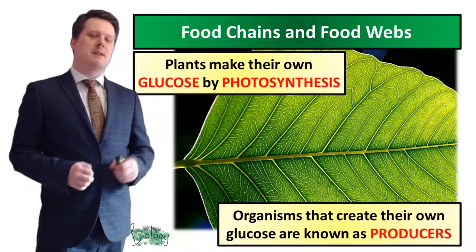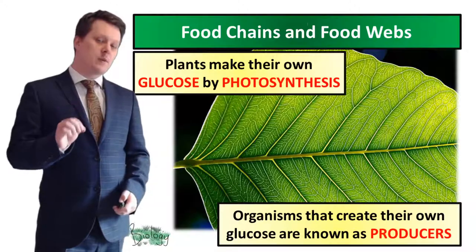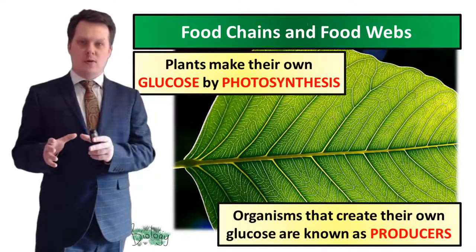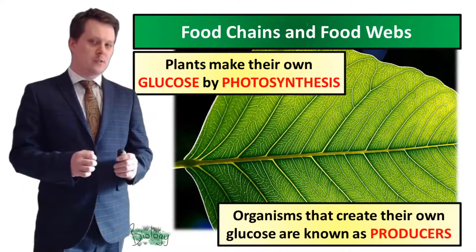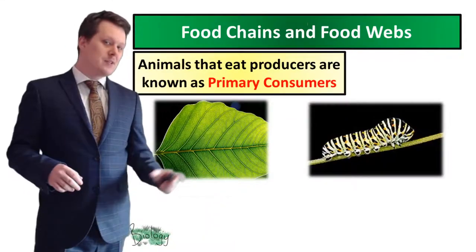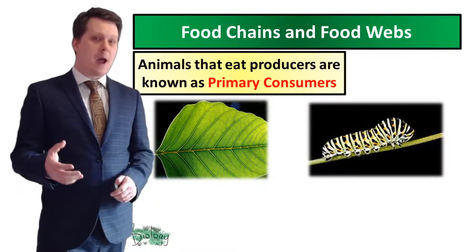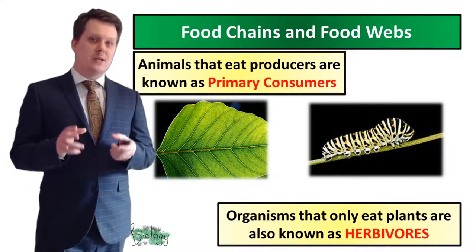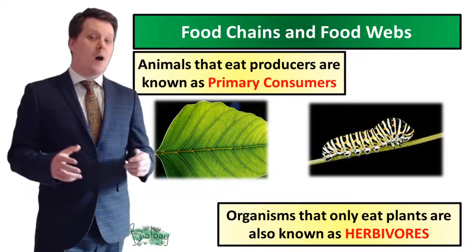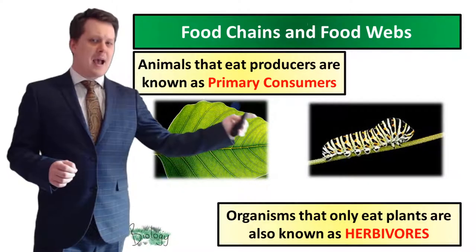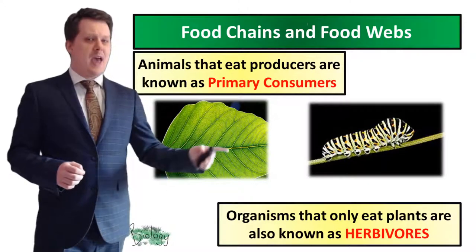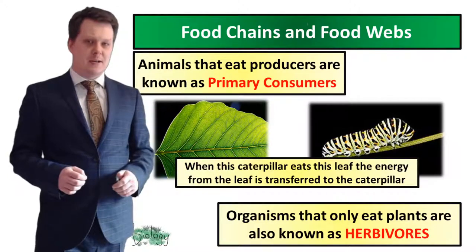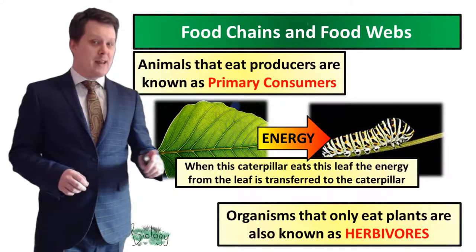Plants make their own glucose by photosynthesis, and we refer to organisms that create their own glucose as producers. Animals that eat producers are known as primary consumers. It's also worth noting that if an organism only eats plants it is known as an herbivore. When a caterpillar eats a leaf, the energy stored in the leaf is transferred to the caterpillar, and we represent this with an arrow.